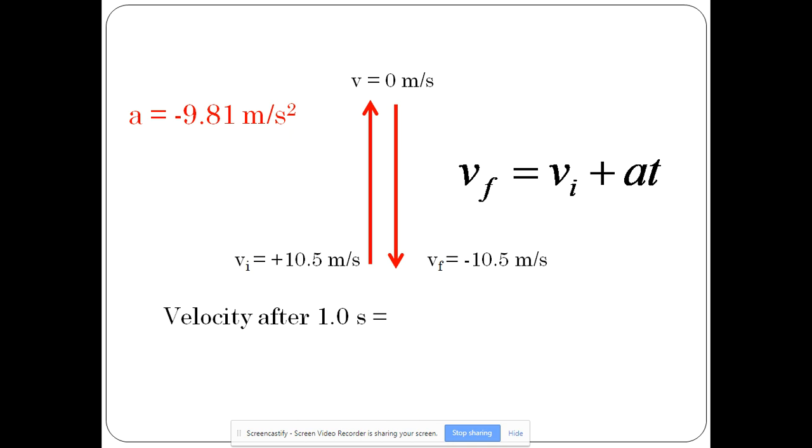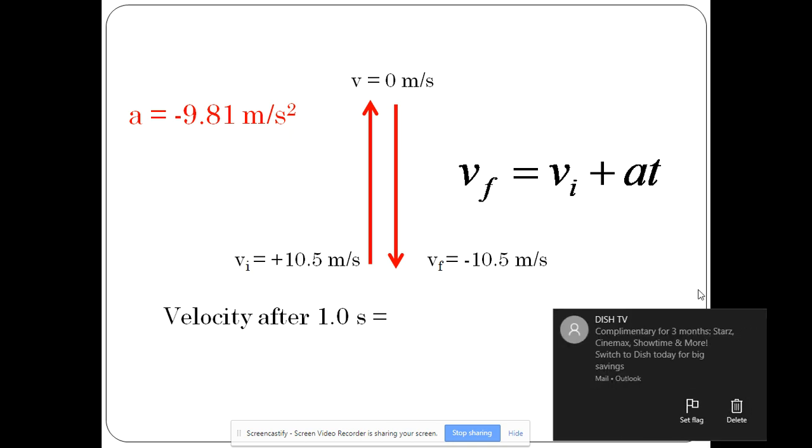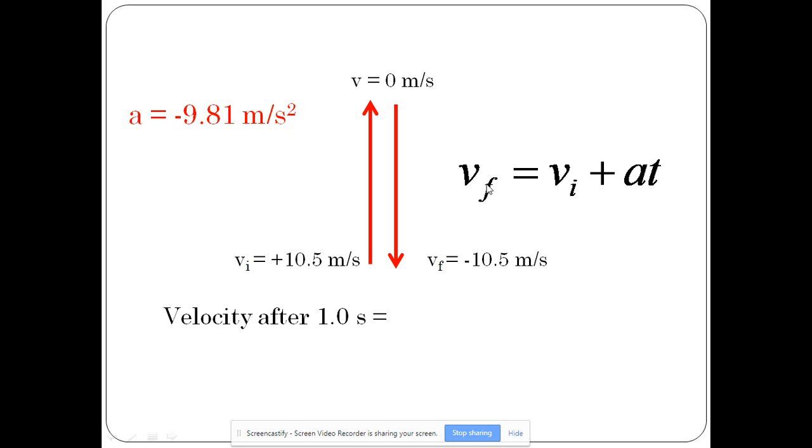So now, let's plug in. Let's plug in the positive 10.5 meters per second for the VI. Plus, A here has to be negative though. Negative 9.81 meters per second squared. And then we'll multiply by one second. Well, you can see that that AT term is going to be negative. So let's subtract that from the VI. And we're going to end up with 0.69 meters per second.